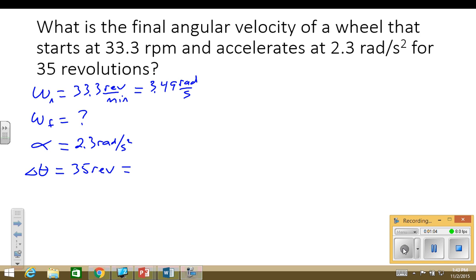Again, that needs to be converted into radians. So basically that's just a matter of multiplying by 2 pi and we get 220 radians will be delta theta.